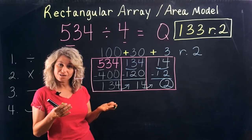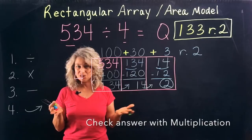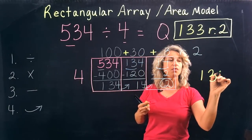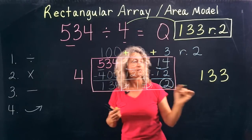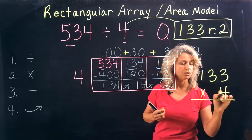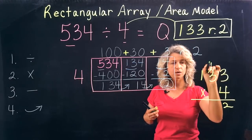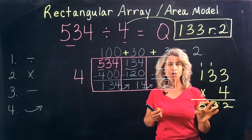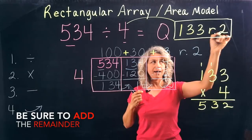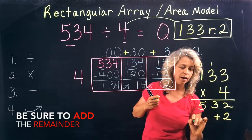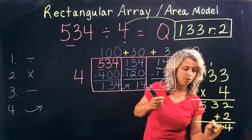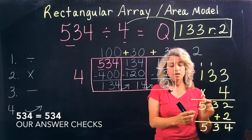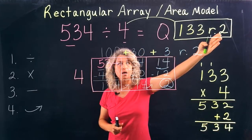How do we know that this is correct? We can check it! The inverse of division is multiplication, so let's check with multiplication. Take the quotient of 133 and multiply it times 4: 4 times 3 is 12, 4 times 3 again is 12 plus 1 is 13, 4 times 1 is 4 plus 1 is 5. You may think we didn't get it right because it looks different — but don't forget to add the remainder of 2, and there you go, it is the same. We started with 534 and we got 534, so the answer is correct.